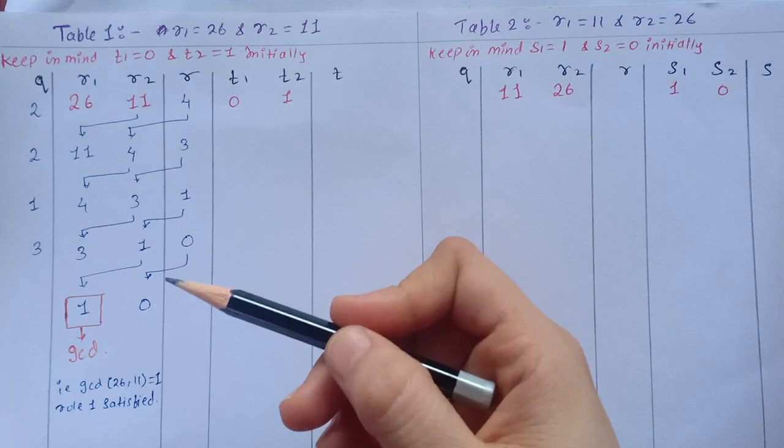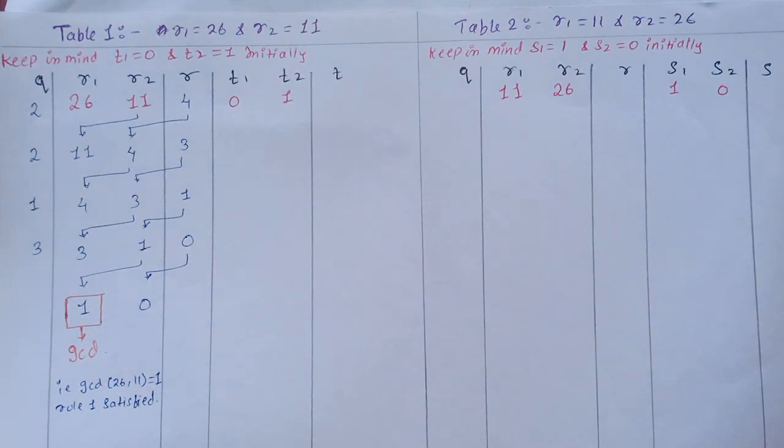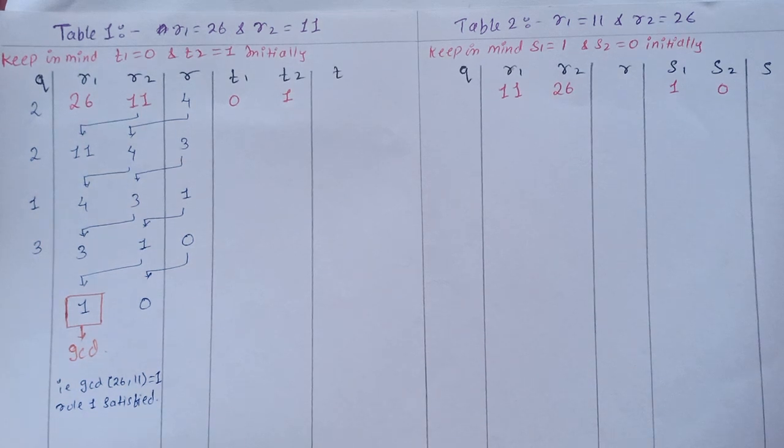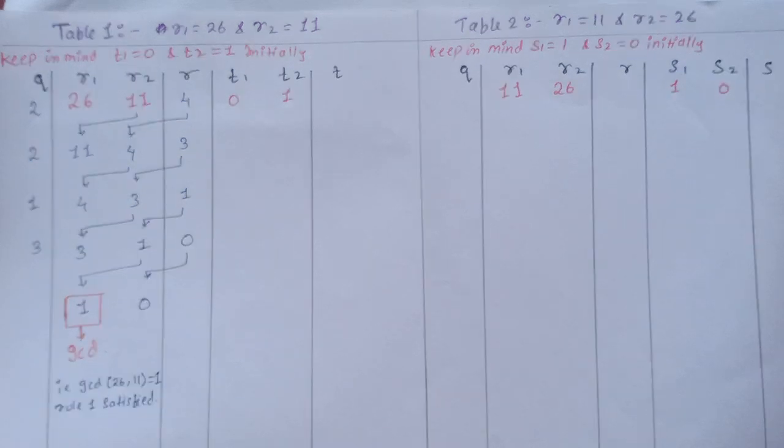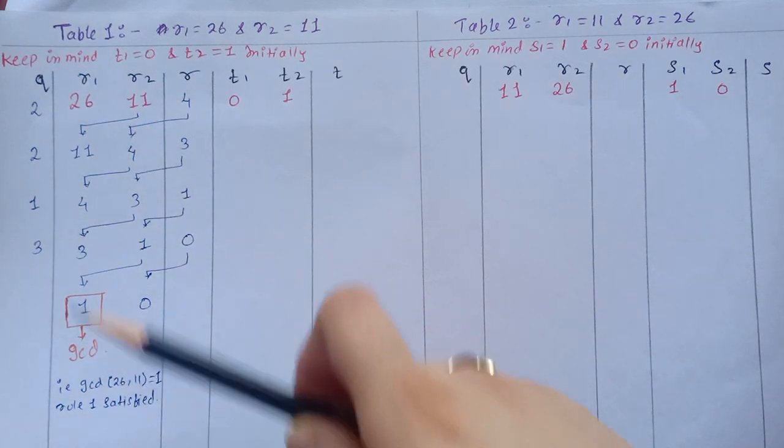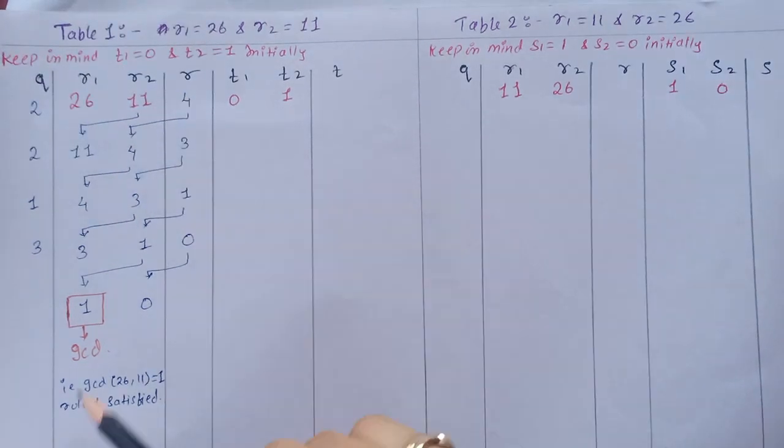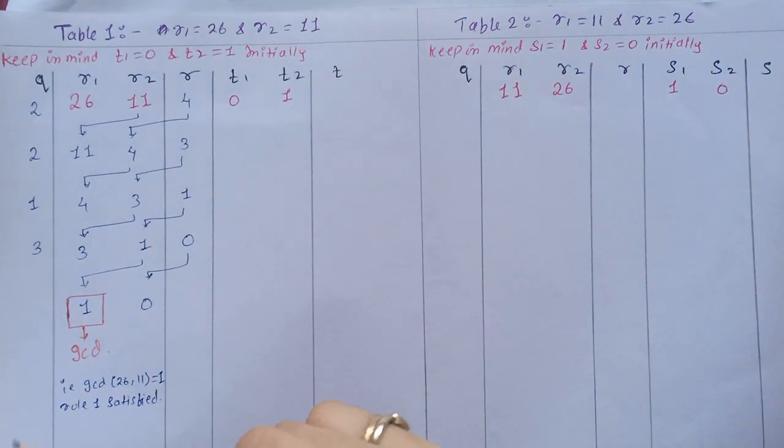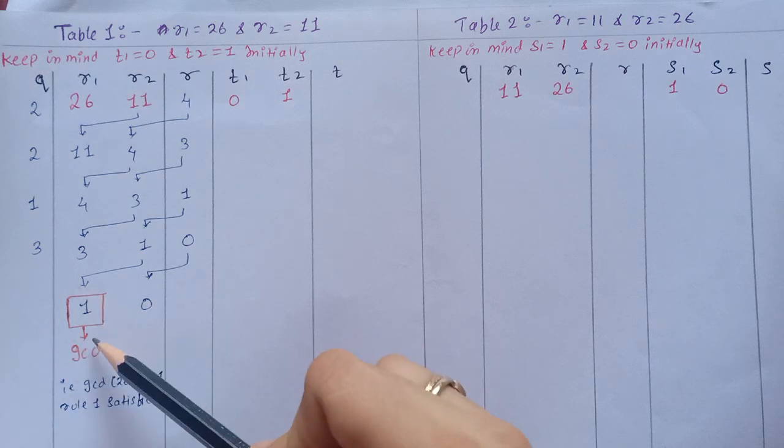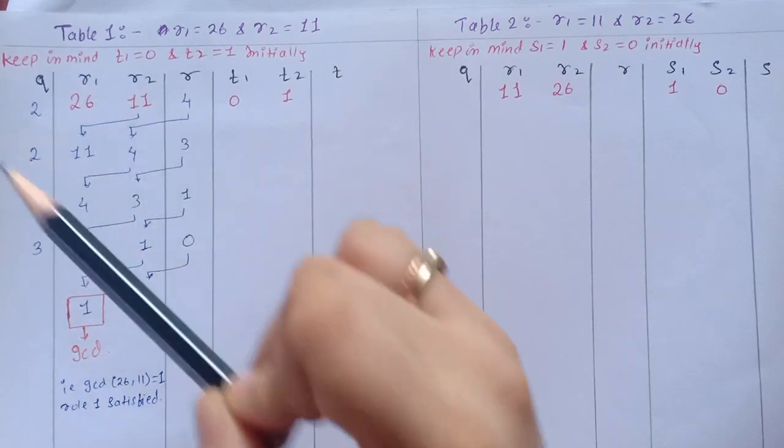Firstly, while finding multiplicative inverse we always need to check rule 1: that is gcd of n comma a should be equal to 1. So first we will do this part. Here r1 is 26 and r2 is 11. So we get the gcd as 1. This means that multiplicative inverse exists for 11 in z26.